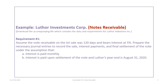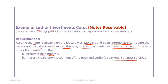This tutorial is based on the Luther Investments Corp example, so please make sure you download the accompanying file and review the data as necessary. We will begin with the first requirement: assume that the note was for 120 days (less than one year, so short-term), bearing interest at 5%. The requirement is to prepare journal entries to record the sale, the interest payments, and the final settlement, assuming interest is paid monthly and that Luther's year-end is August 31st.